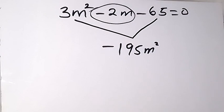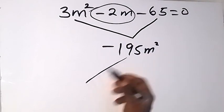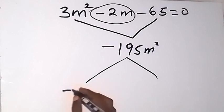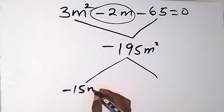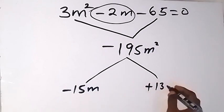Now what are those two factors? You can split this number into two factors that will give you -2m when you add them together. When you look at this, we have -15m then +13m.